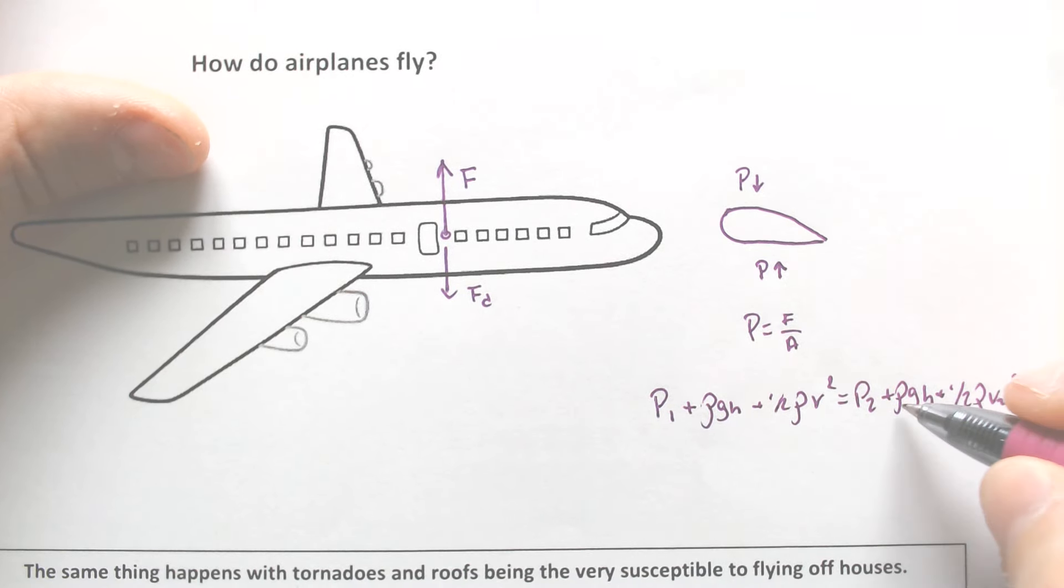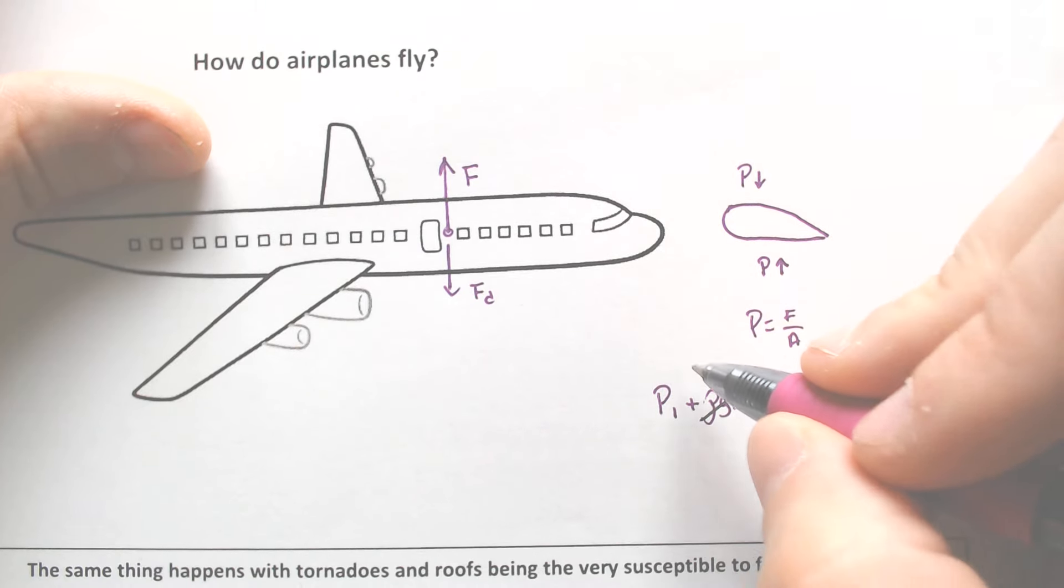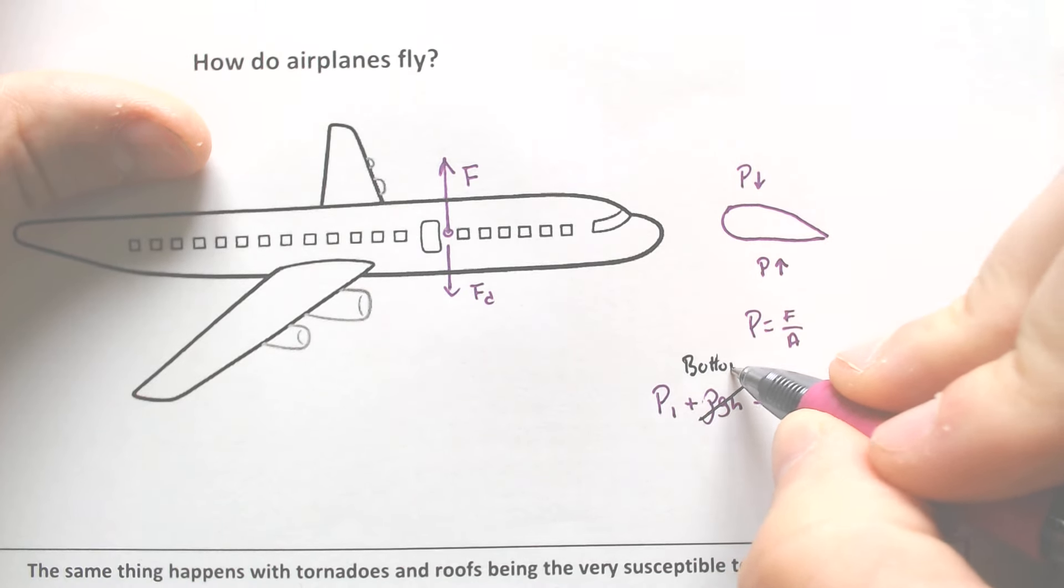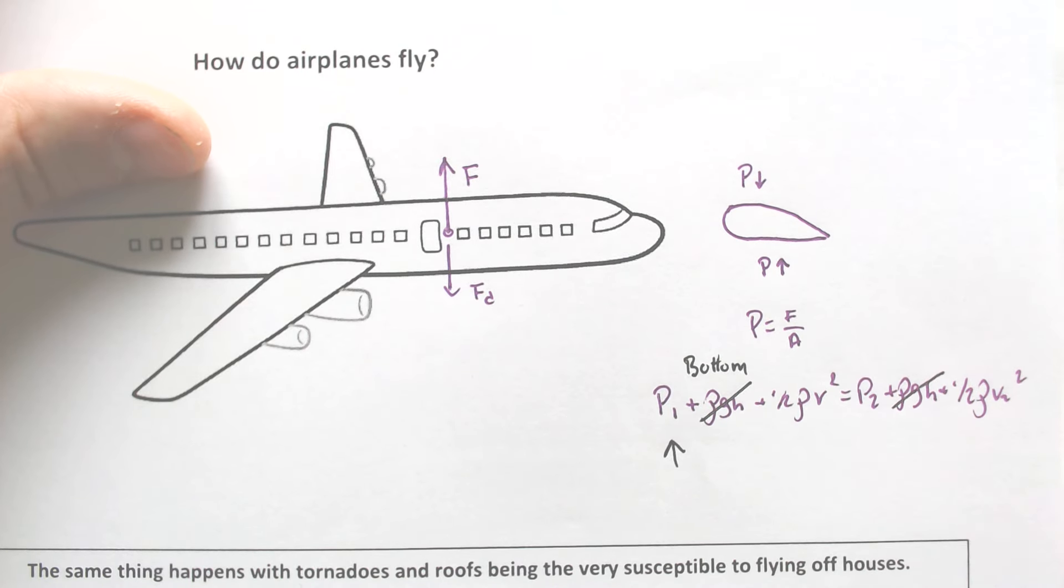Now, these are essentially the same height, so that doesn't really matter too much. If we want the pressure to be more on the bottom, let's call this the bottom, the velocity would have to be smaller.